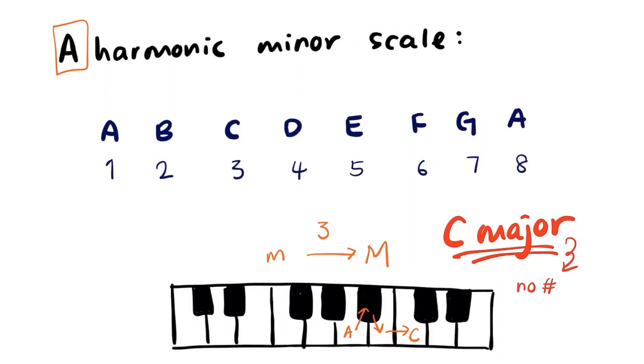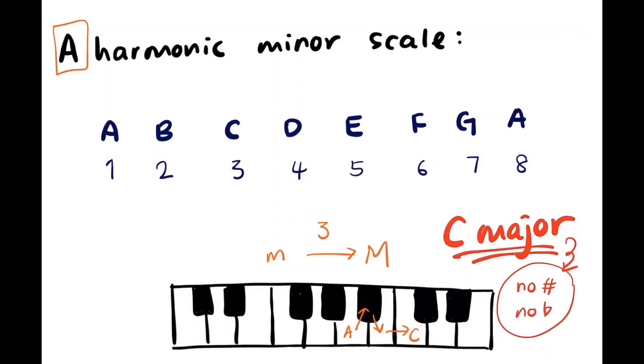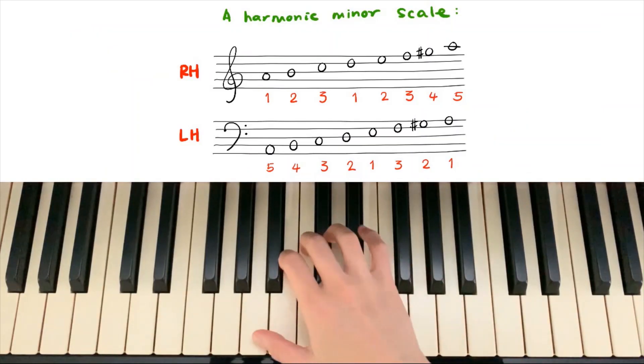However, we need to raise the 7th note a semitone higher for a harmonic minor scale. The 7th note in an A minor scale is G, so G must be raised to G sharp. Now we know an A harmonic minor scale has one G sharp. Let's try to play it on the piano.